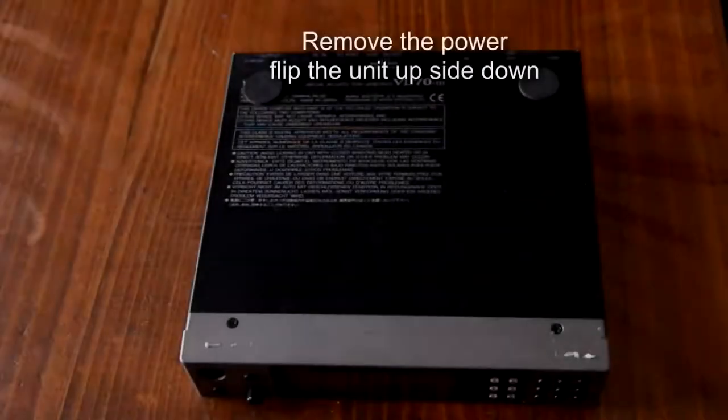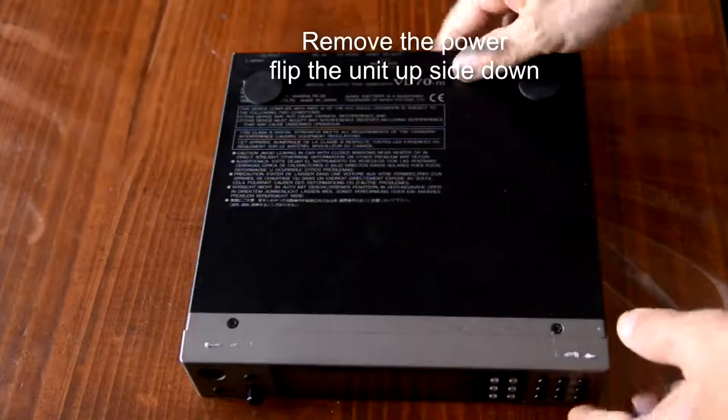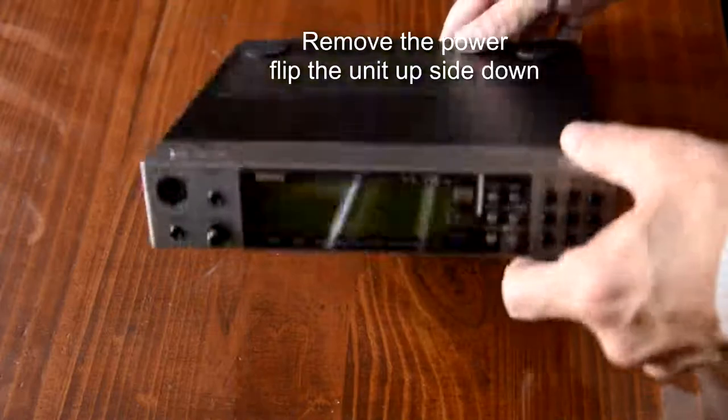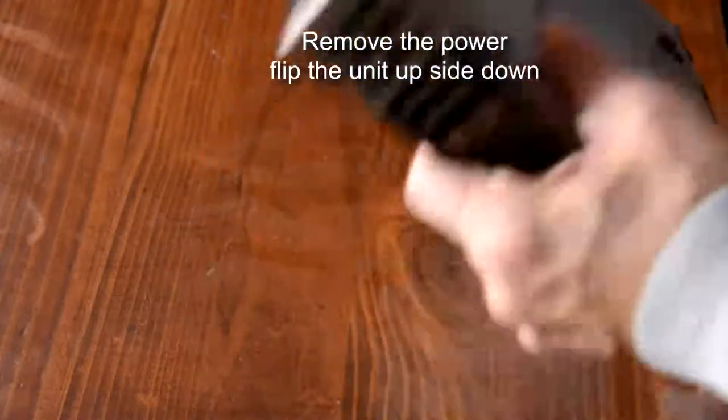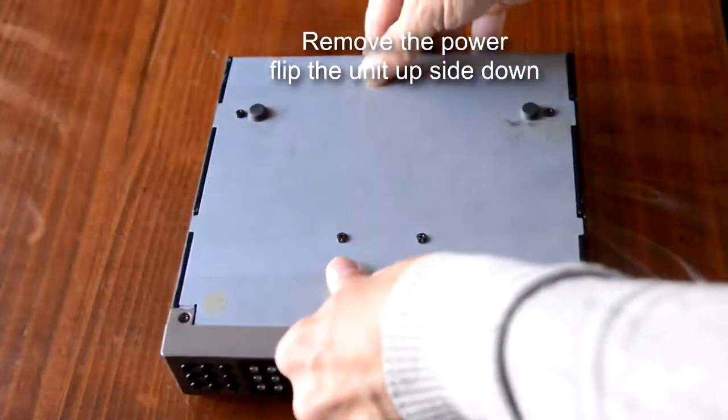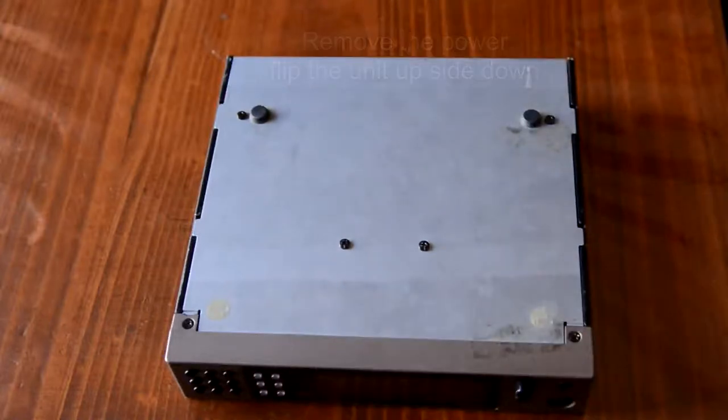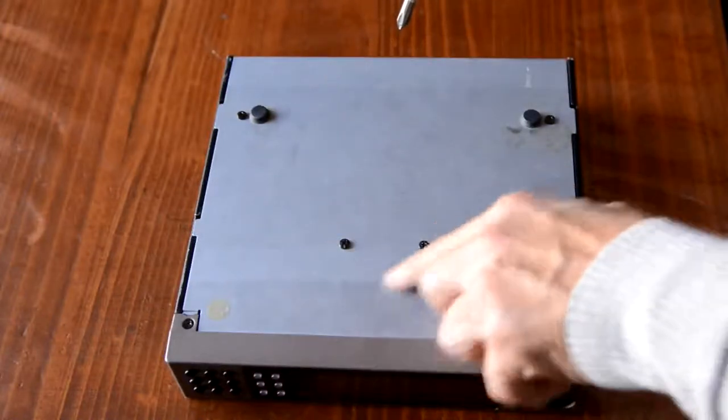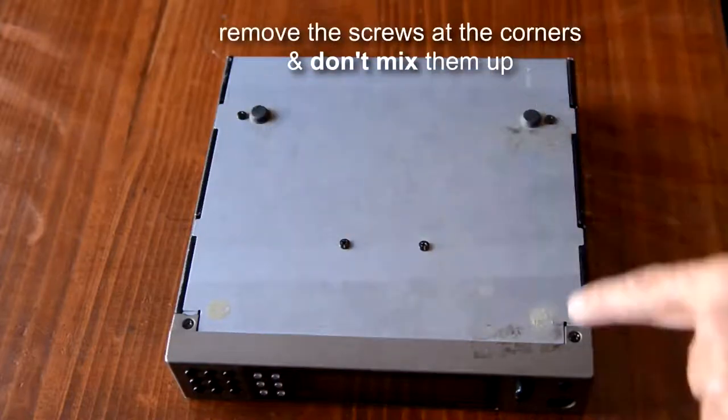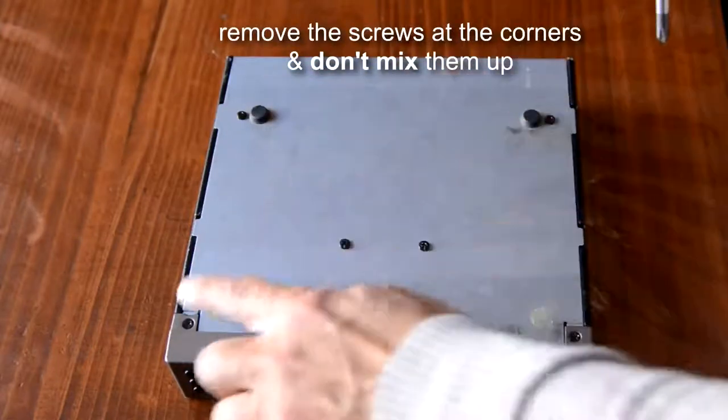Now remove the power and flip the unit upside down, and you'll find a few screws at the back. These ones here we're not going to touch—they only attach to the plate. We're going to remove those four screws to start with.